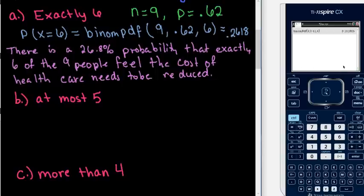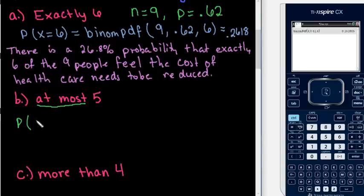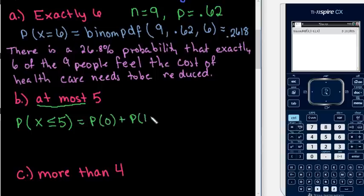So for this one, what it's asking for is the probability of at most 5. When we think about at most 5, the highest number we want is 5, meaning less than or equal to 5. So we are really looking for the probability of 0 plus the probability of 1, all the way up through the probability of 5. You can do this by hand but it's very long.